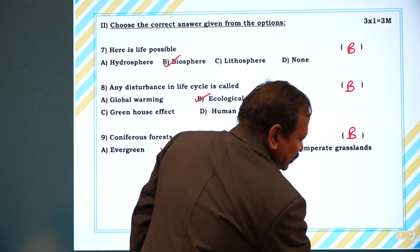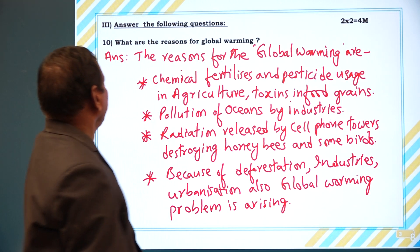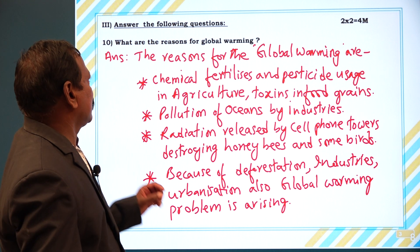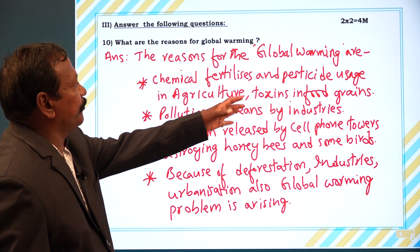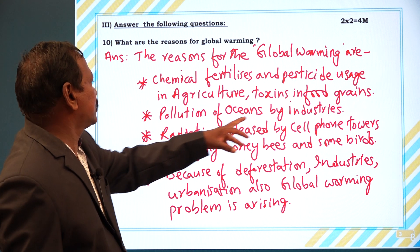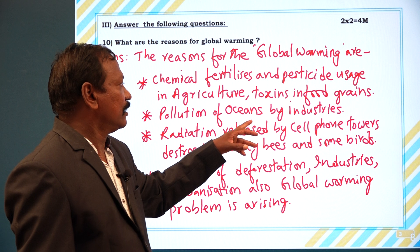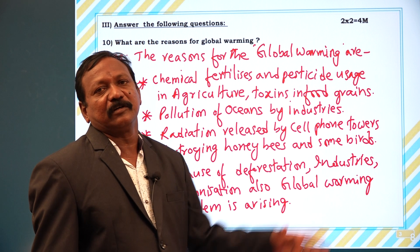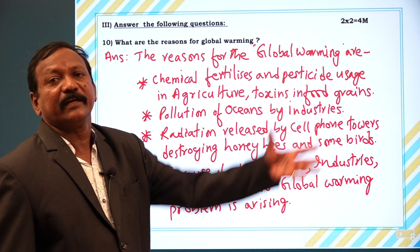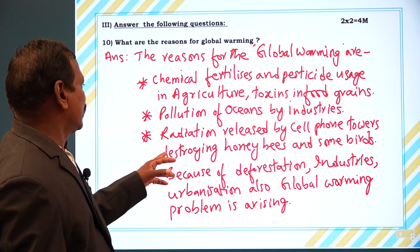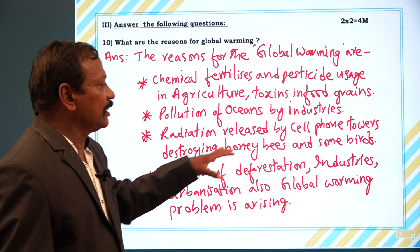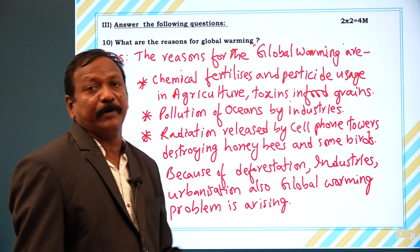Now we shall move to the descriptive questions. Question ten: what are the reasons for global warming? The reasons for global warming are: chemical fertilizers and pesticides usage in agriculture, toxins in food grains, pollution of oceans by industries, and radiation released by cell phone towers destroying honey bees and some other birds.